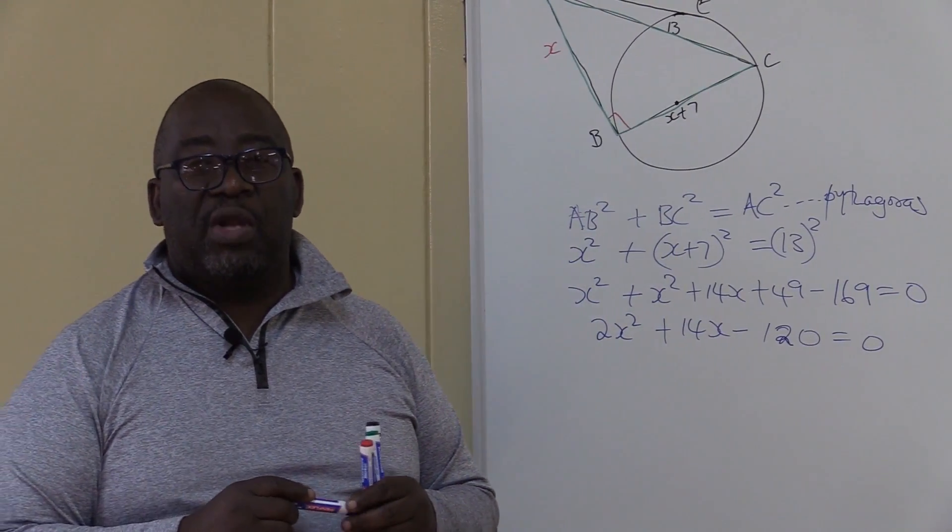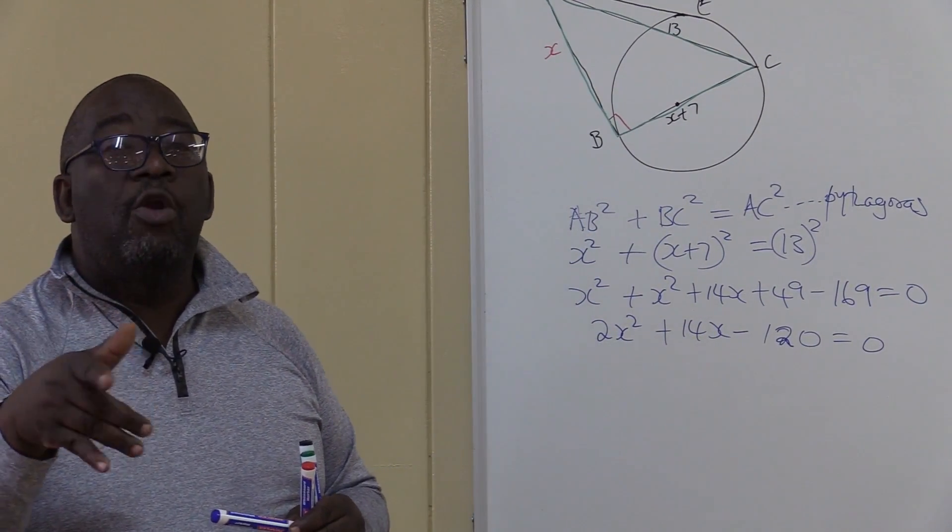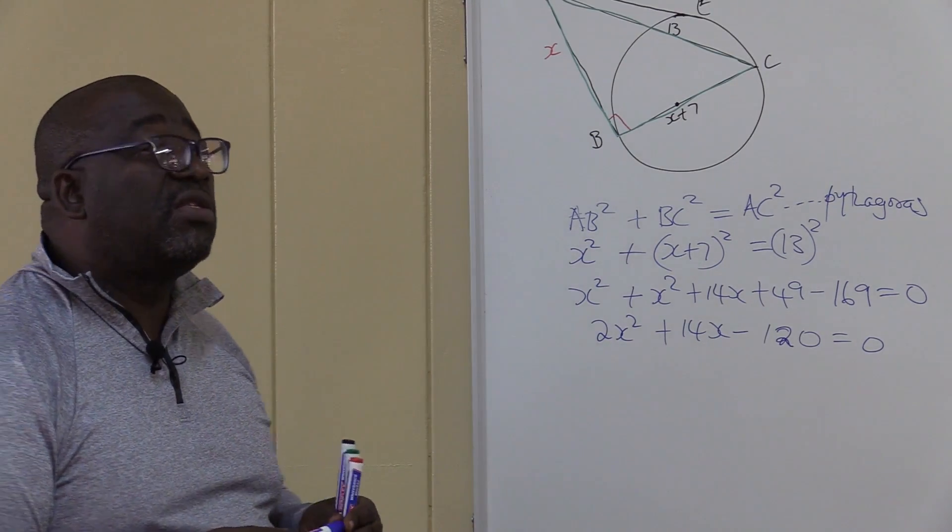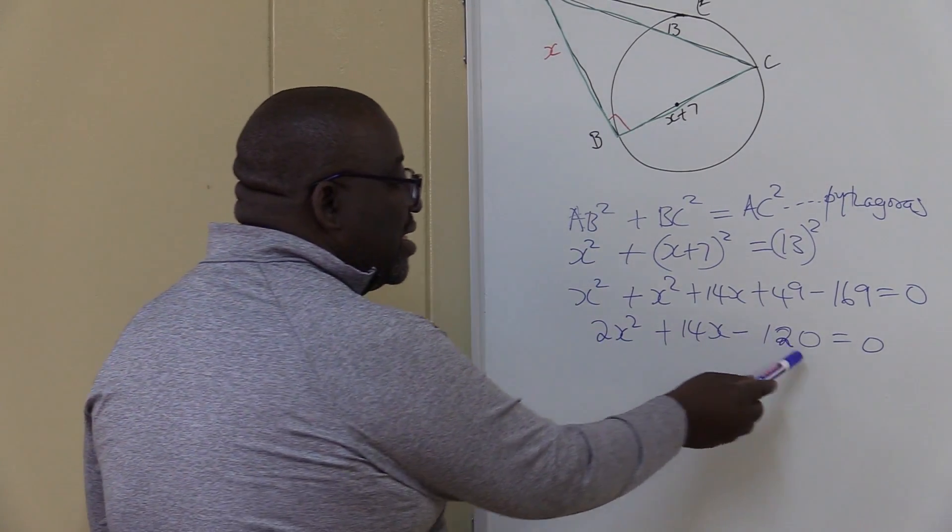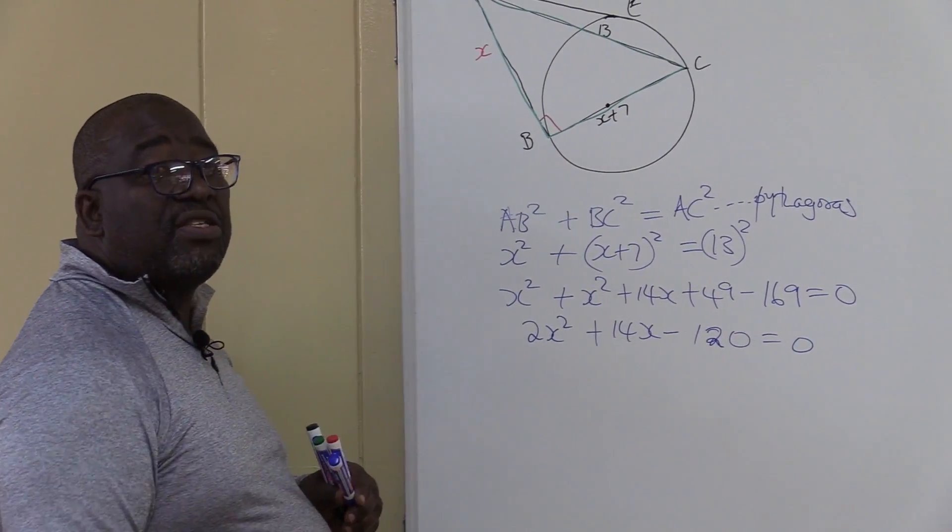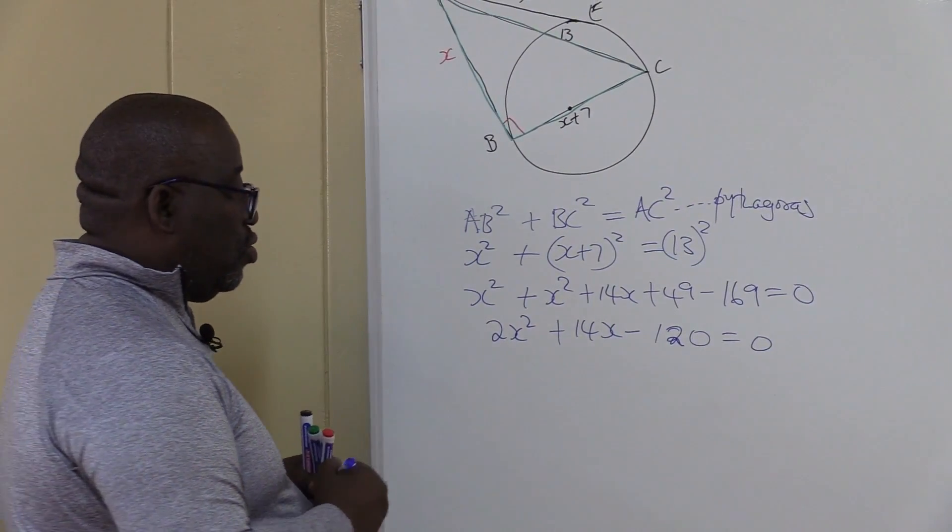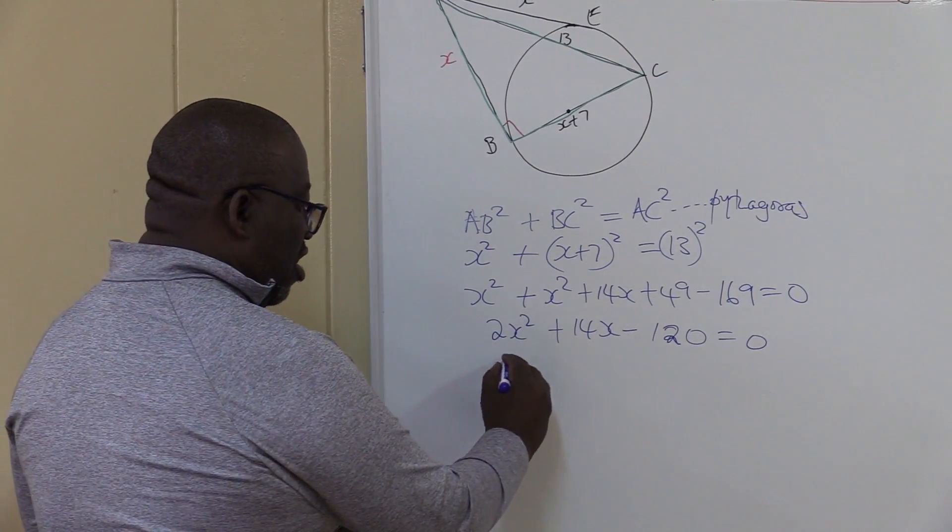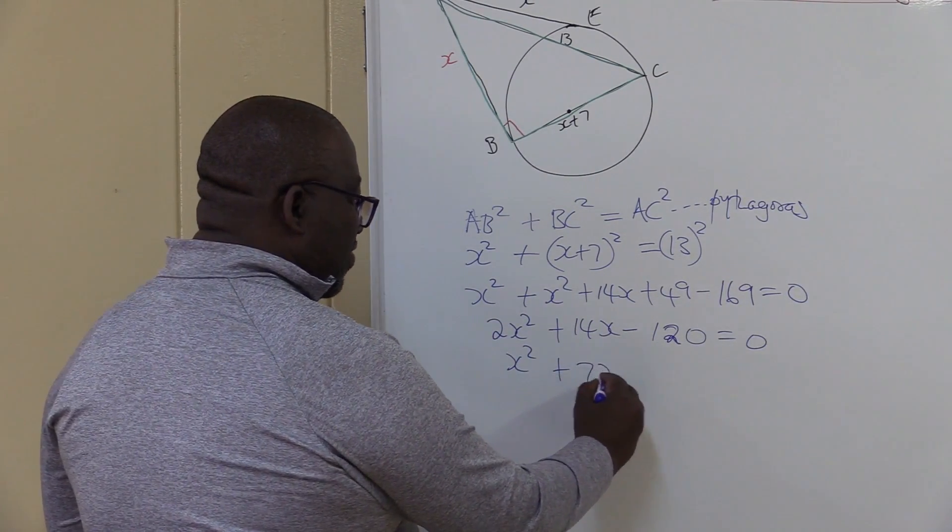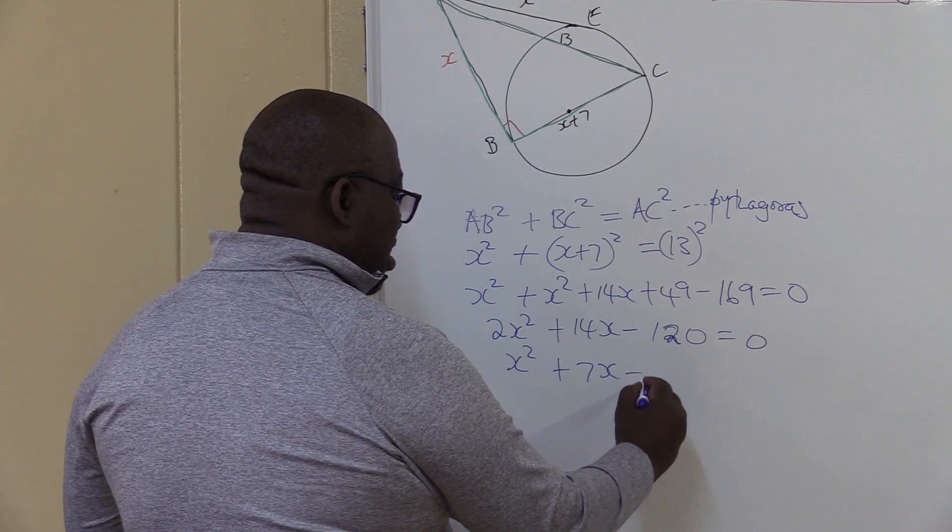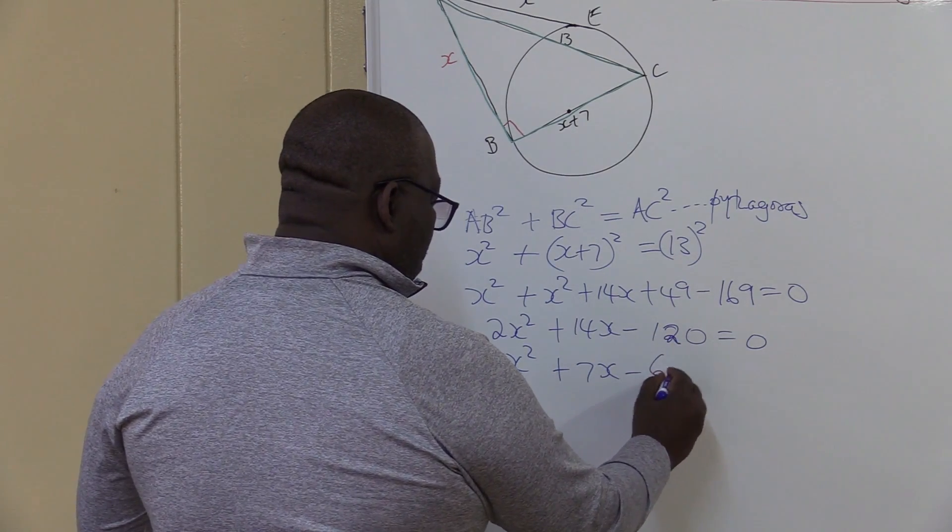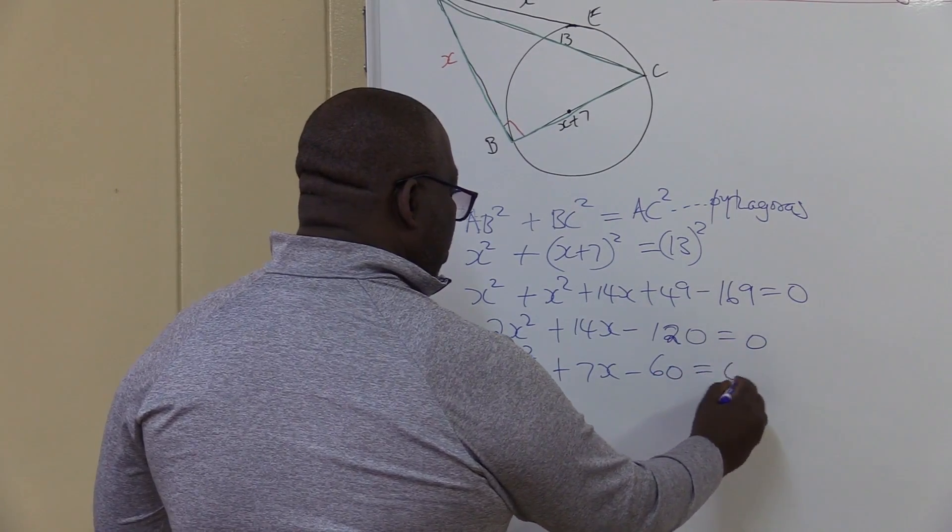We factorize. What is the first step when you factorize? Is to open your eyes and look for a common factor. You don't calculate it. You just open your eyes and look for it. Something that is common in these three terms. We can see that 2 is common. To make life easier, we divide everything by 2. If we divide this by 2, I will be left with X squared plus, divide this by 2 is 7X minus 120 divided by 2 is 60.